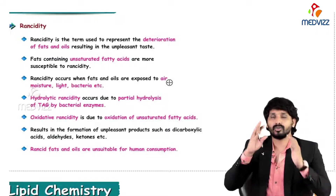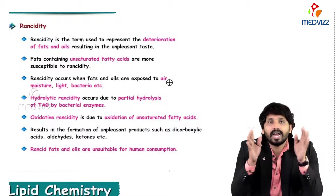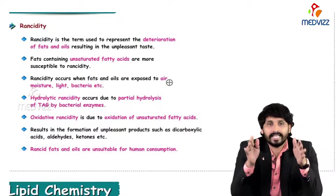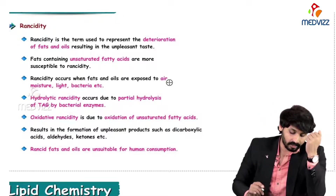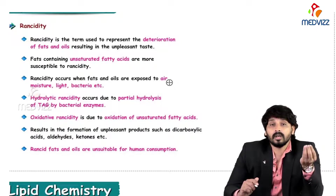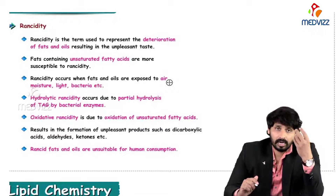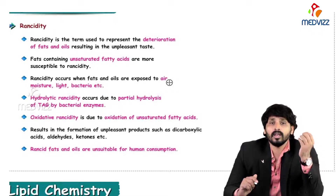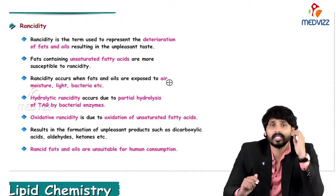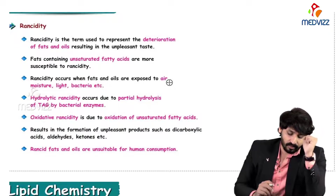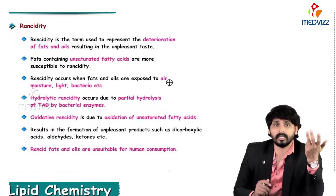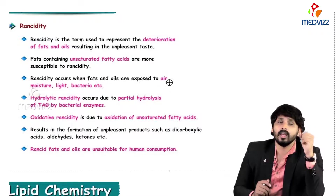Rancidity means deterioration of fat - degradation of fat developing unpleasant odor and taste. Fats containing unsaturated fatty acids are more susceptible to rancidity. Vegetable oils like groundnut oil and other oils, which are unsaturated, are more susceptible to developing rancidity. Rancidity occurs when fats and oils are exposed to air, moisture, light, and bacteria - these are all the reasons behind rancidity.